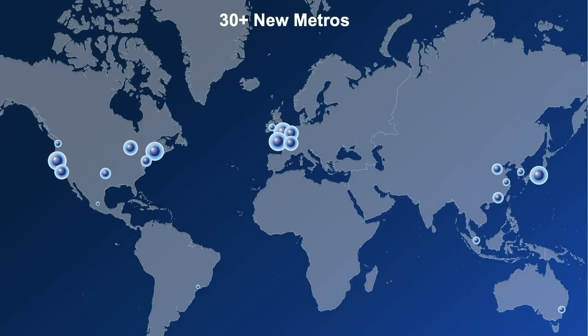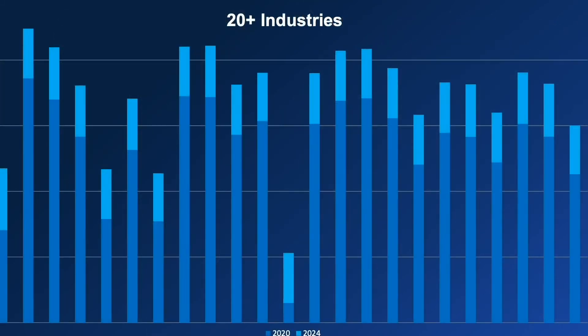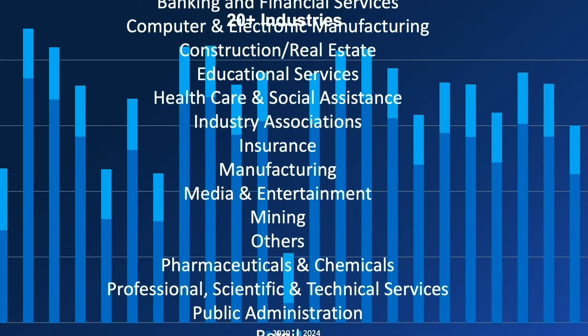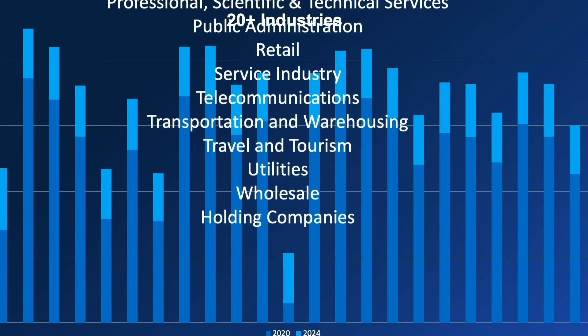I'm now announcing the Data Gravity Index version 1.5, which will be available in a few weeks. It has quite substantial new additions. First and foremost, 30-plus new metros have been added to the report — new and upcoming metros that provide lots of interesting data points for where your business should potentially go next. In addition, we've included analysis across 20-plus different industries, with highlights in the report and deeper dives to follow.